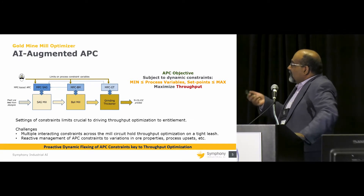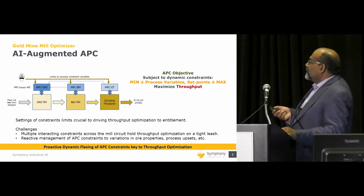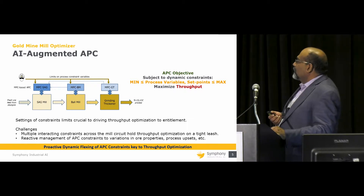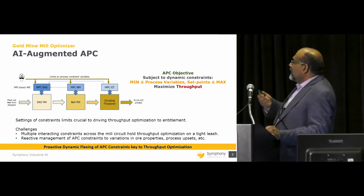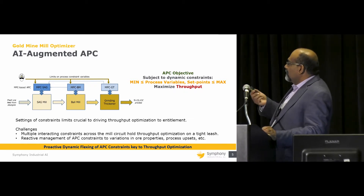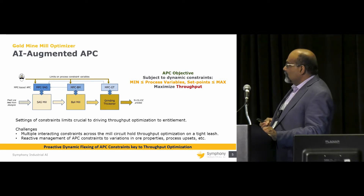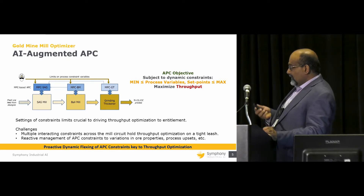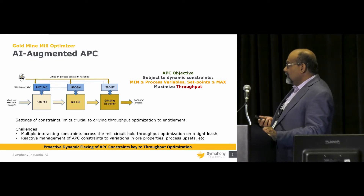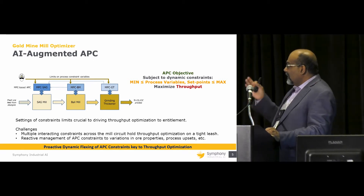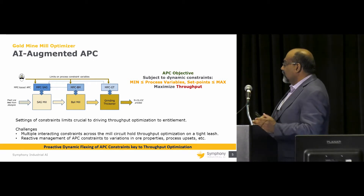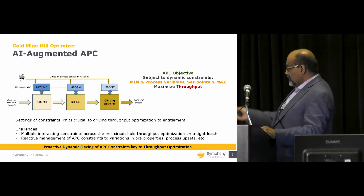This is a block diagram view of how it works. The traditional APC objective was using a certain constraint to maximize the throughput, and then the APC worked to set the variables to maximize the throughput. But the challenges were multiple interacting constraints across the mill circuit — not at each individual mill, but across the mill circuit there were interaction constraints.